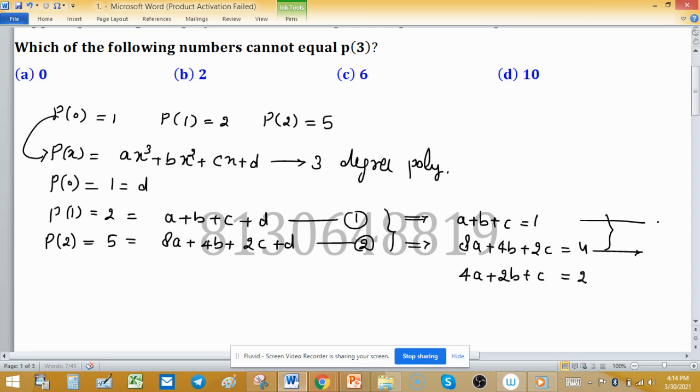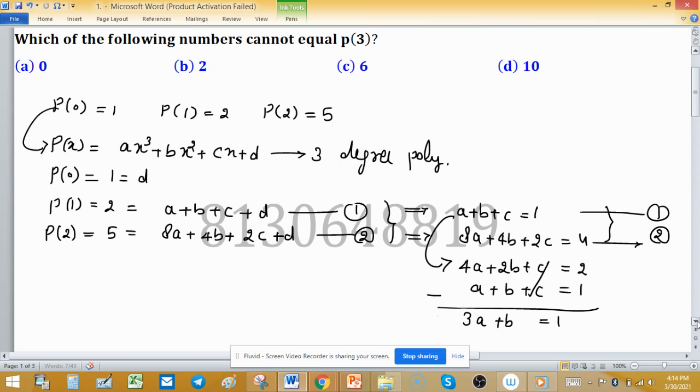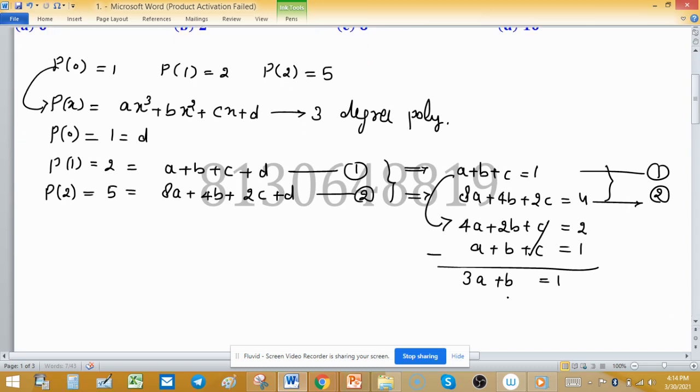Now use these two equations to find solution. Subtract this one from this. A + B + C is 1, now subtract, this one will cancel out, so 3A + B is 1. We obtain the value of B equal to 1 - 3A.